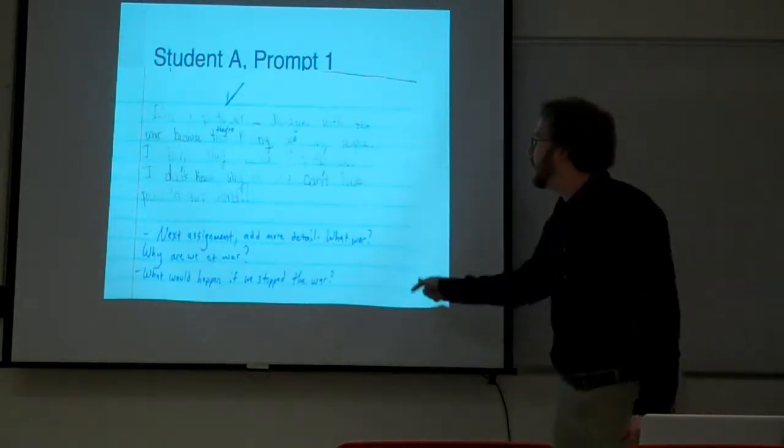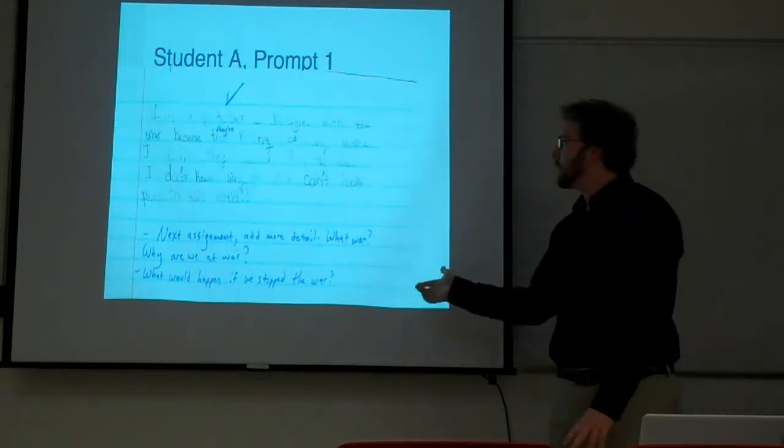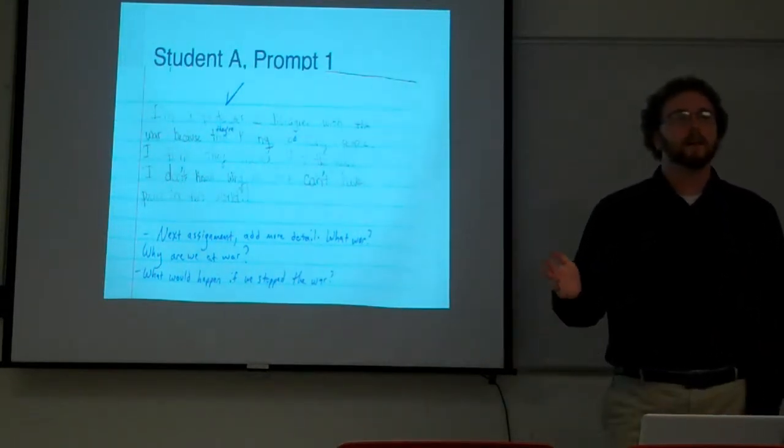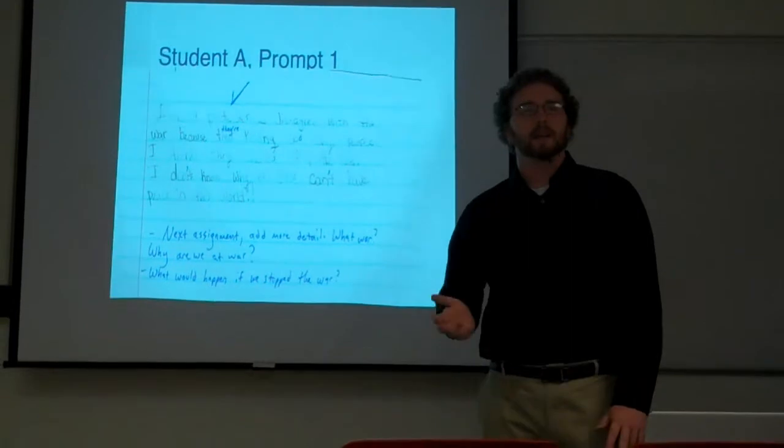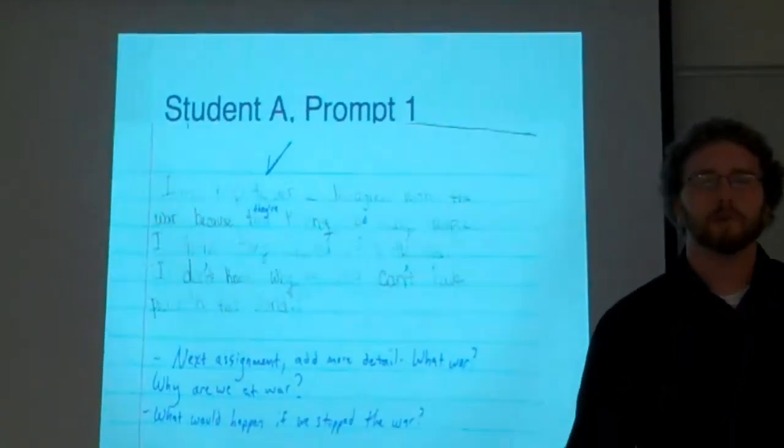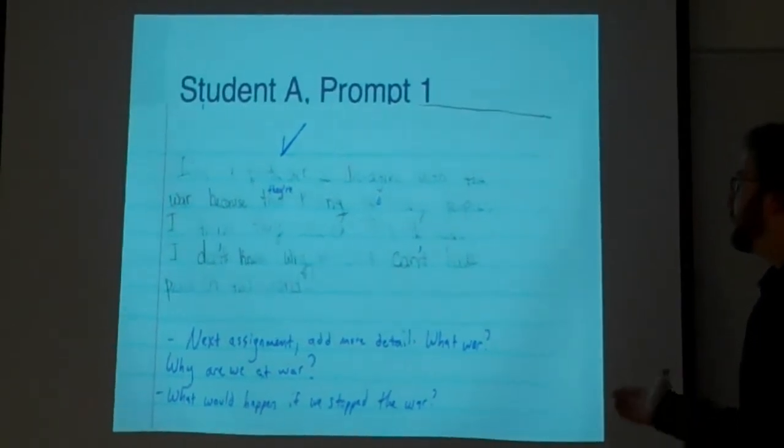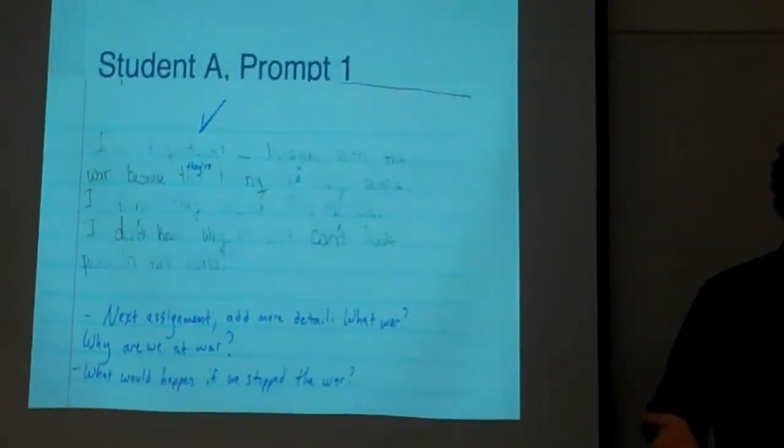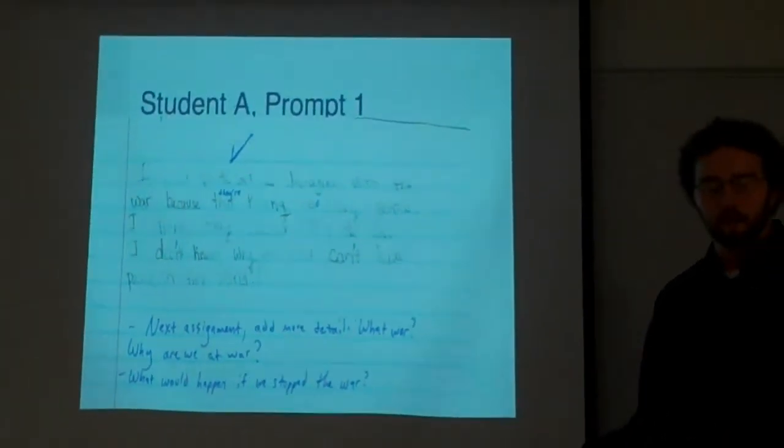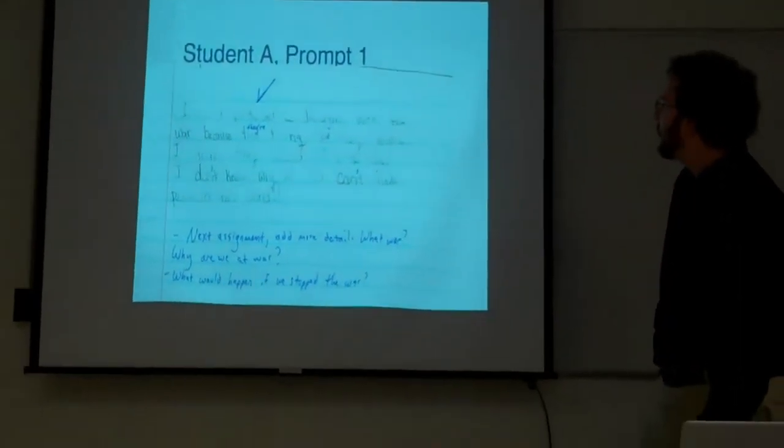Student A, prompt 1, as you can see, she said that she's a protester and she disagrees with it because they're killing a lot of people. But she never exactly specifies what war she's talking about, anything to really do with the war. So I said, next assignment, add more detail. You did well by sticking with one side, but I'd like to see more detail in the future.